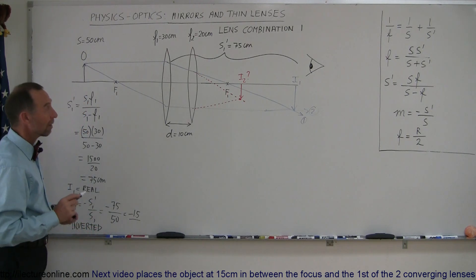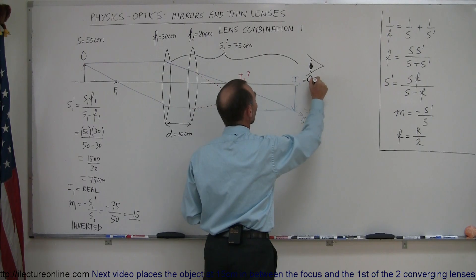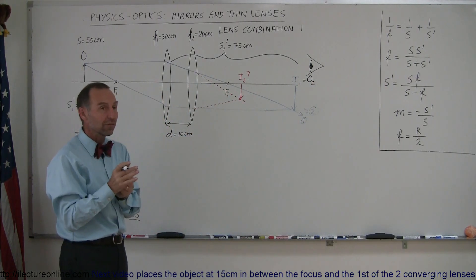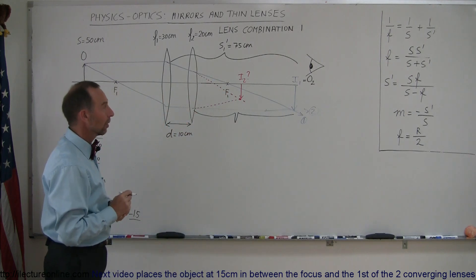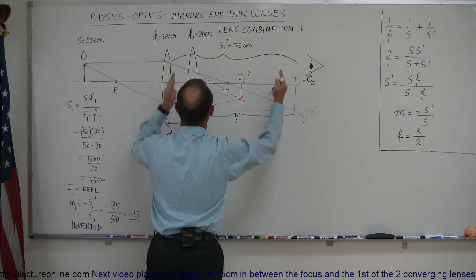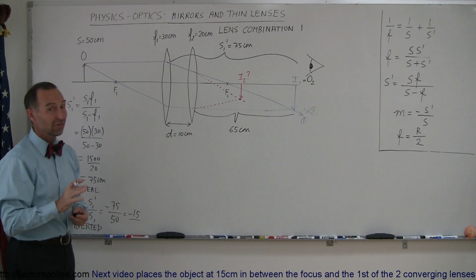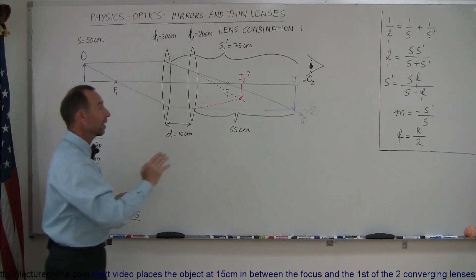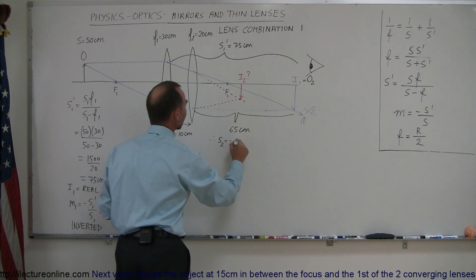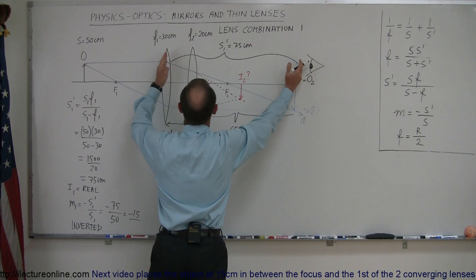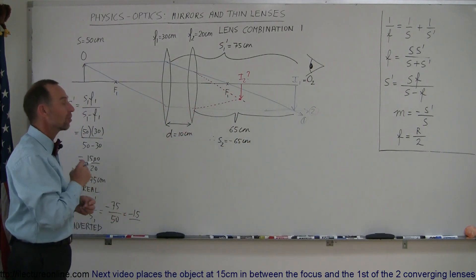Now we're ready to find the second image. It turns out that image 1 becomes the object of the second lens. The image of the first lens acts as if it's the object of the second lens, which means we need that object distance for the second lens. This distance would be the 75 centimeters minus the 10 centimeters separation between the two lenses, giving 65 centimeters. Since the object is behind the second lens — to the right instead of the left — we call that a negative object distance: S2 equals minus 65 centimeters.